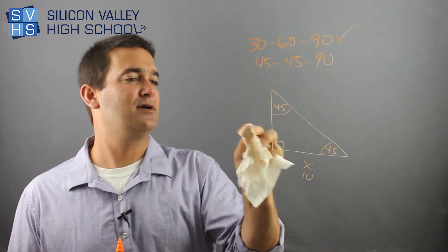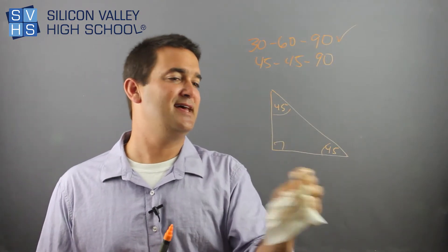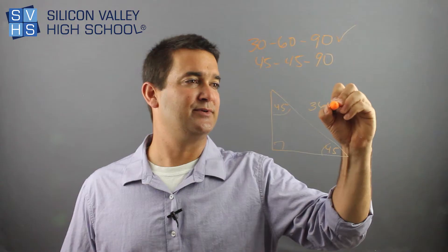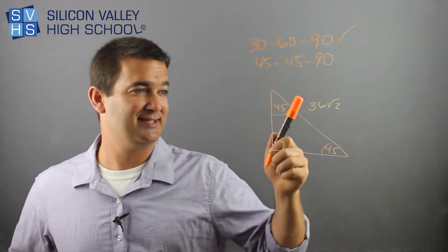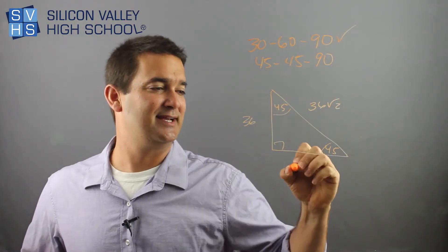So what if I'm doing my homework and this is like randomly 36 root 2? Oh, that's super easy because that's x root 2. This is 36, 36.